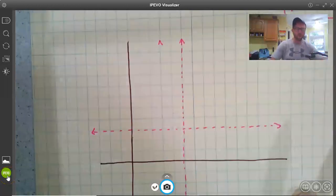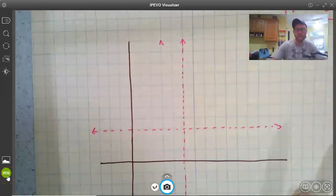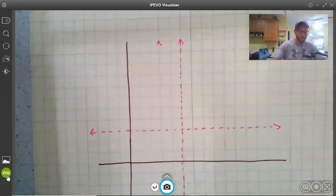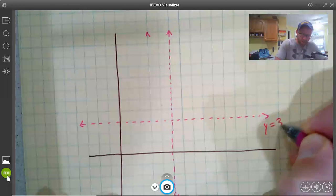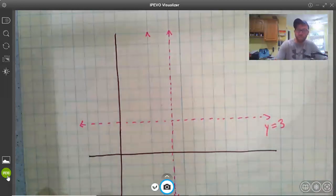Let's talk again about horizontal lines, vertical lines, and slope. Here I have a horizontal line. This is y equals 3. That's the equation for it.